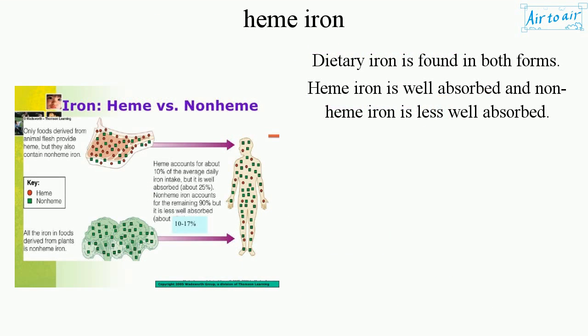Dietary iron is found in both forms. Heme iron is well absorbed and non-heme iron is less well absorbed.